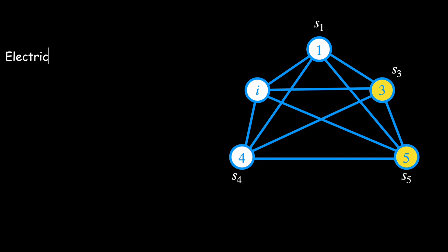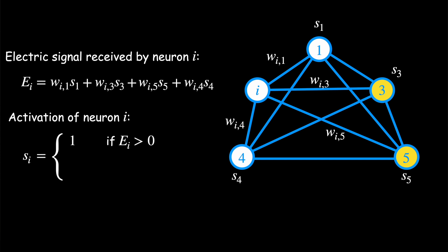In our network, neuron i receives an electric signal from every other neuron j, which is scaled by the conductivity Wij of the synapse Ji, which can be positive or negative. If the total energy received by neuron i is positive, then the neuron is activated and its potential is set equal to 1. Otherwise, it is set to 0.